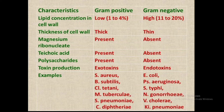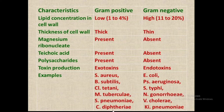Gram positive bacteria produce exotoxins, whereas gram negative bacteria produce endotoxins. Examples of gram positive bacteria: S. aureus, Bacillus subtilis, Clostridium tetani, Mycobacterium tuberculosis, Streptococcus pneumoniae, and C. diphtheriae. Examples of gram negative bacteria: E. coli, Pseudomonas aeruginosa, Salmonella typhi, Neisseria gonorrhoeae, Vibrio cholerae, and Klebsiella pneumoniae.